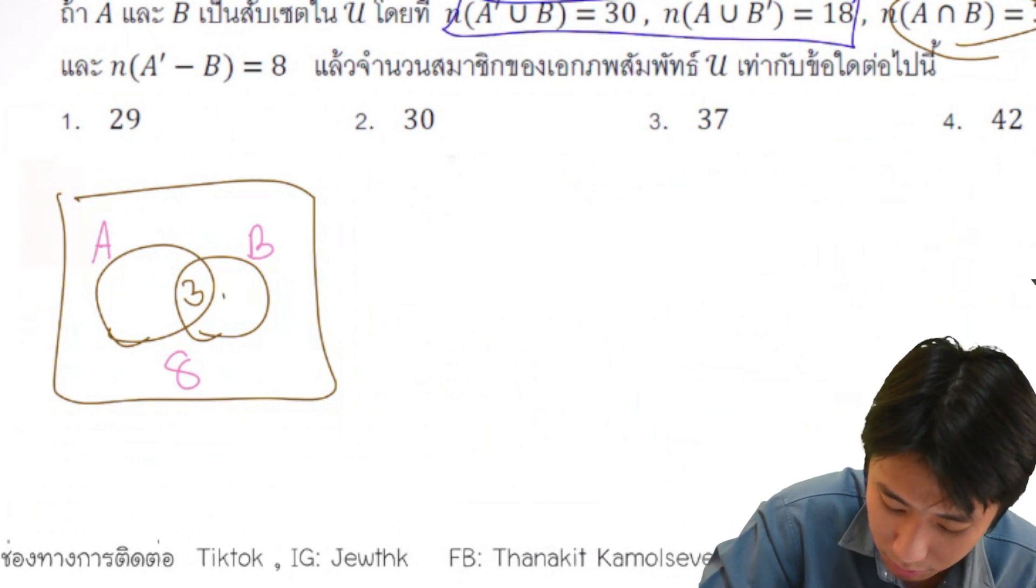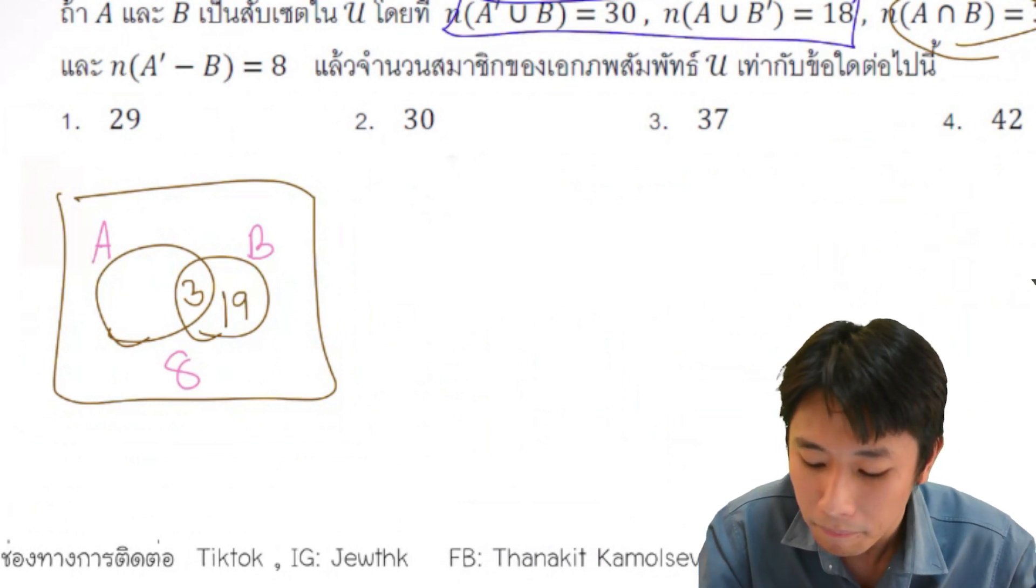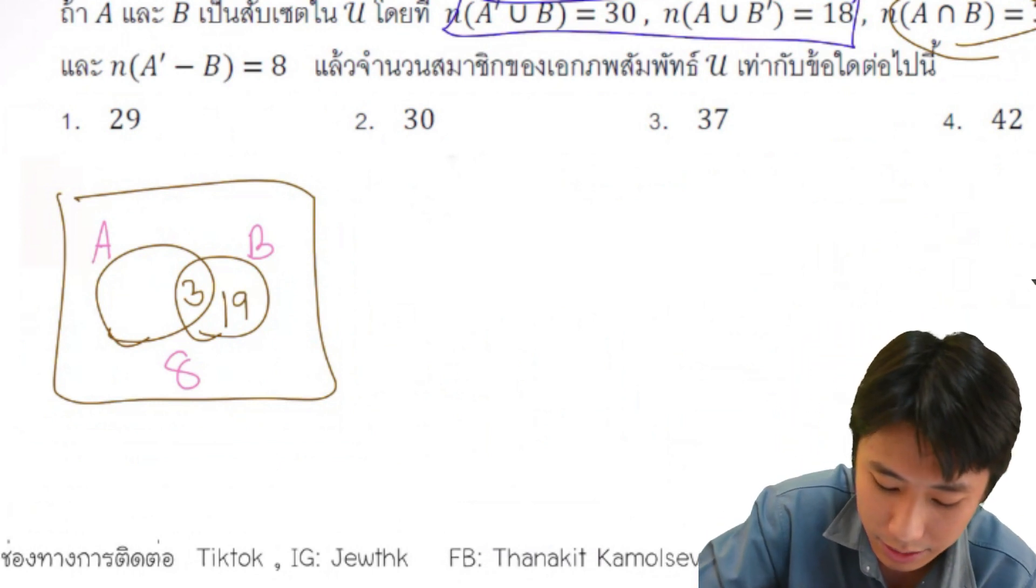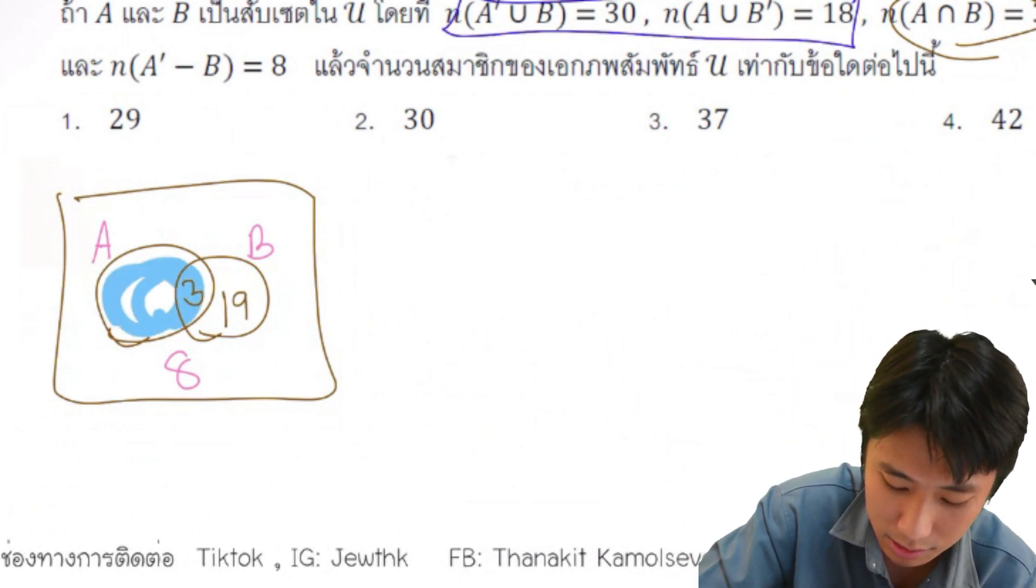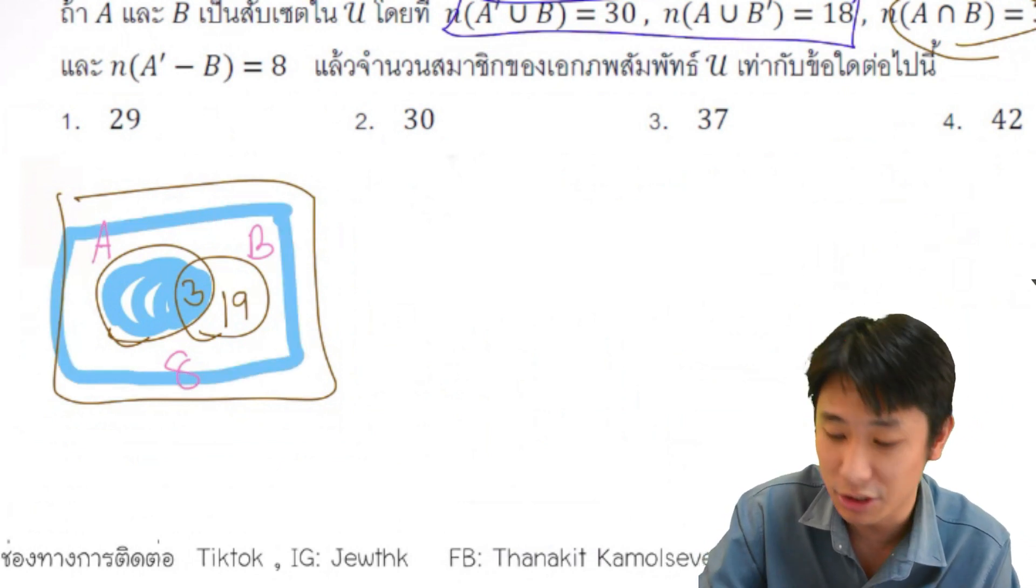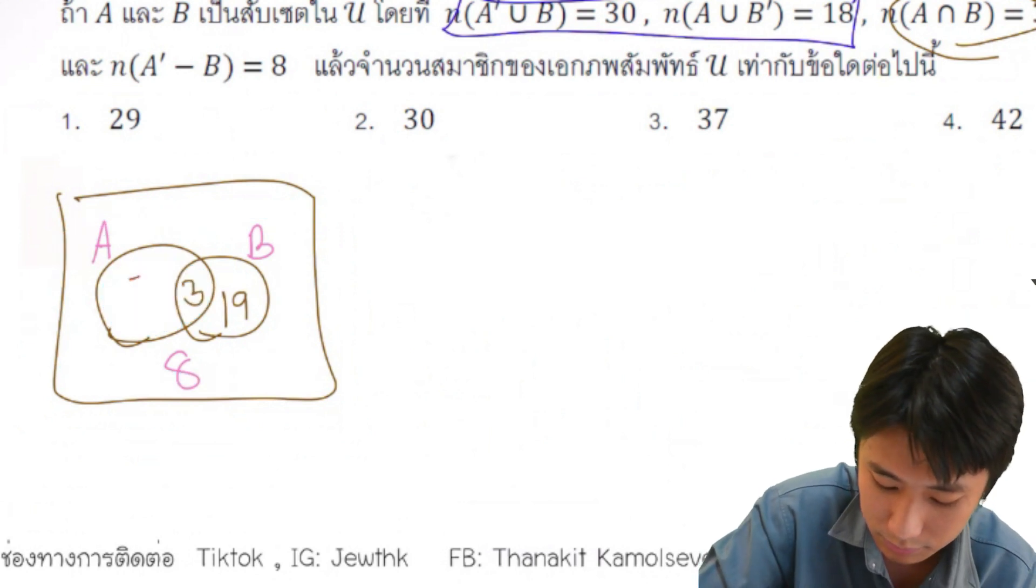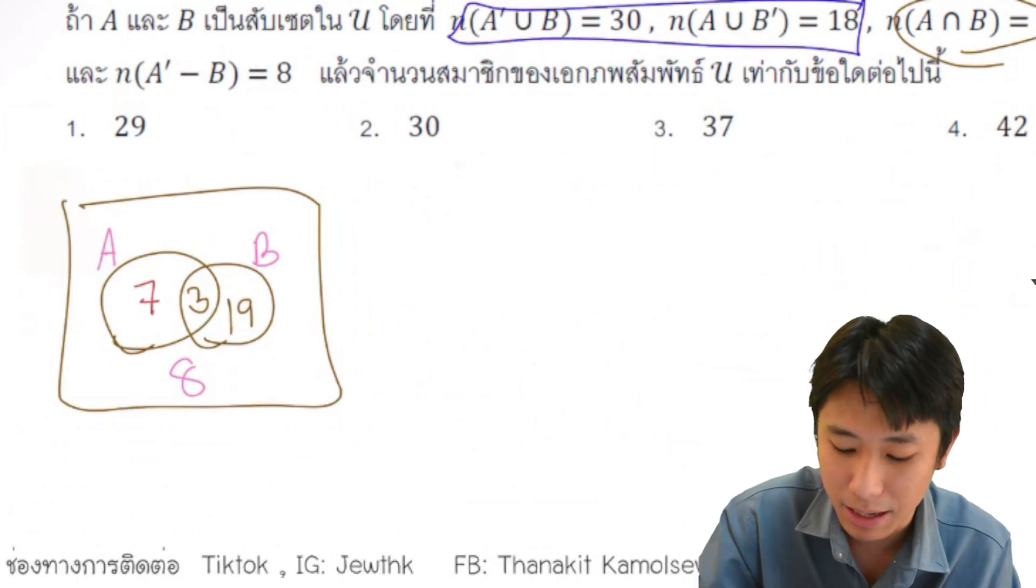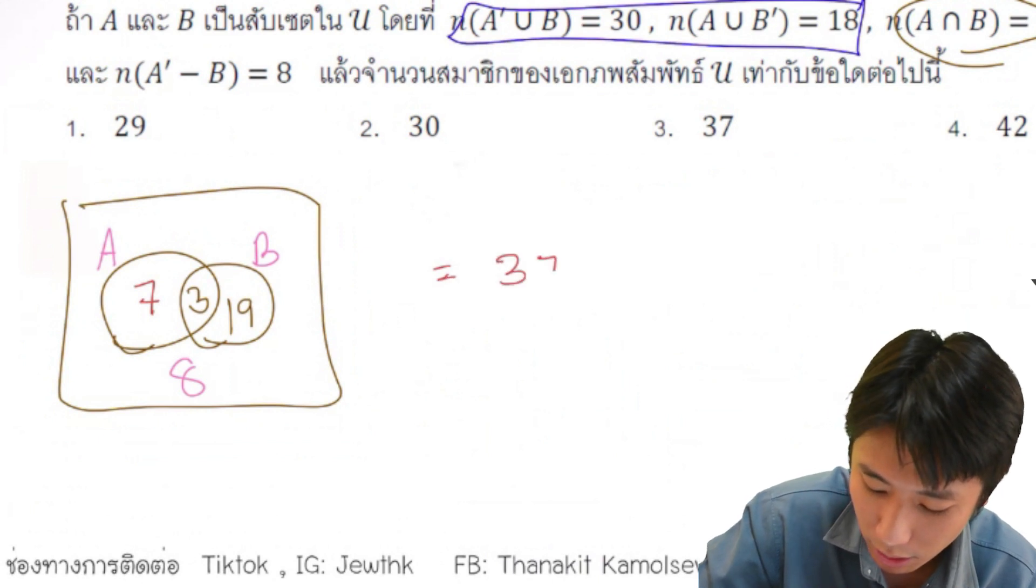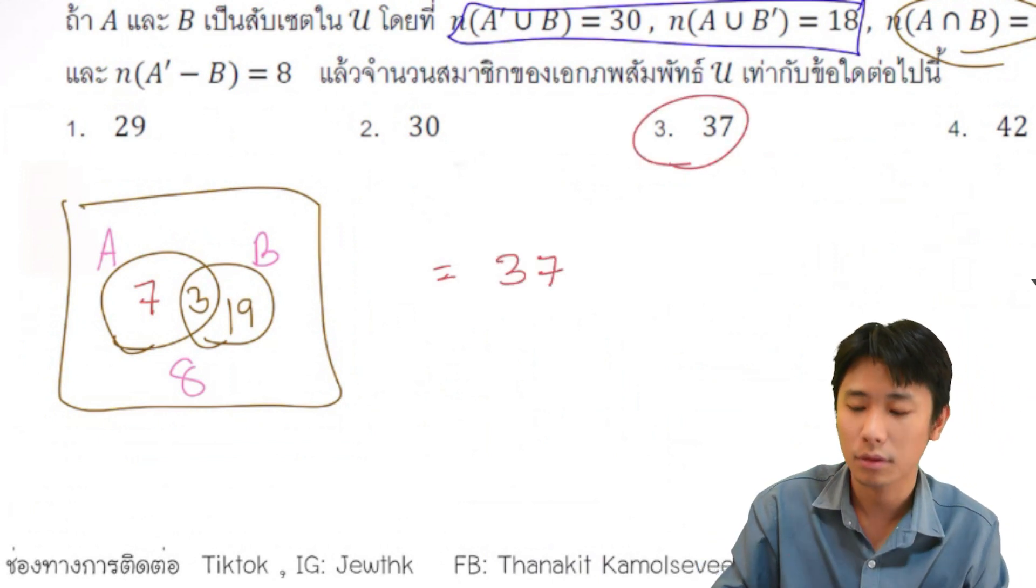This one is already written. Let's do this again. A complement union B is here. This one is 8, 3, 11, this one is 7, right? Okay. 15, 18, 37. That's the answer.